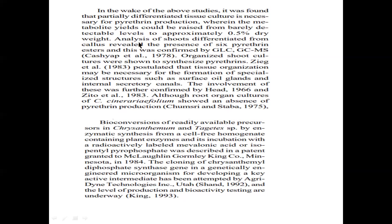They also used shoot cultures — shoots differentiated from callus — and organized shoot cultures were shown to synthesize a good amount of pyrethrin. Bioconversions of readily available precursors were studied using radioactively labeled mevalonic acid. Mevalonic acid is one precursor for pyrethrin, and isopentyl pyrophosphate is another; these two are the key precursors for pyrethrin production.